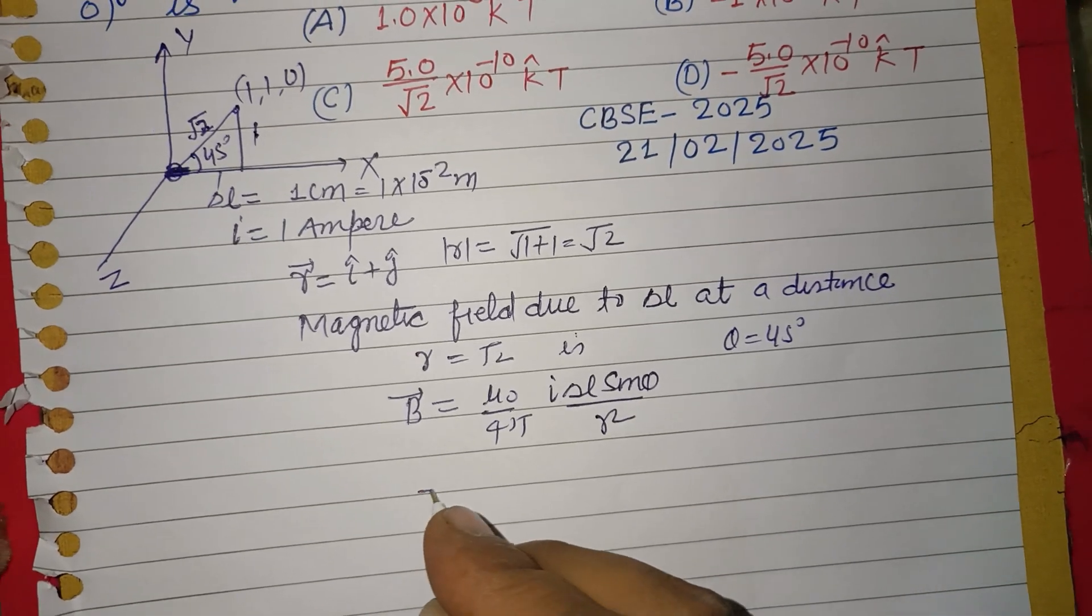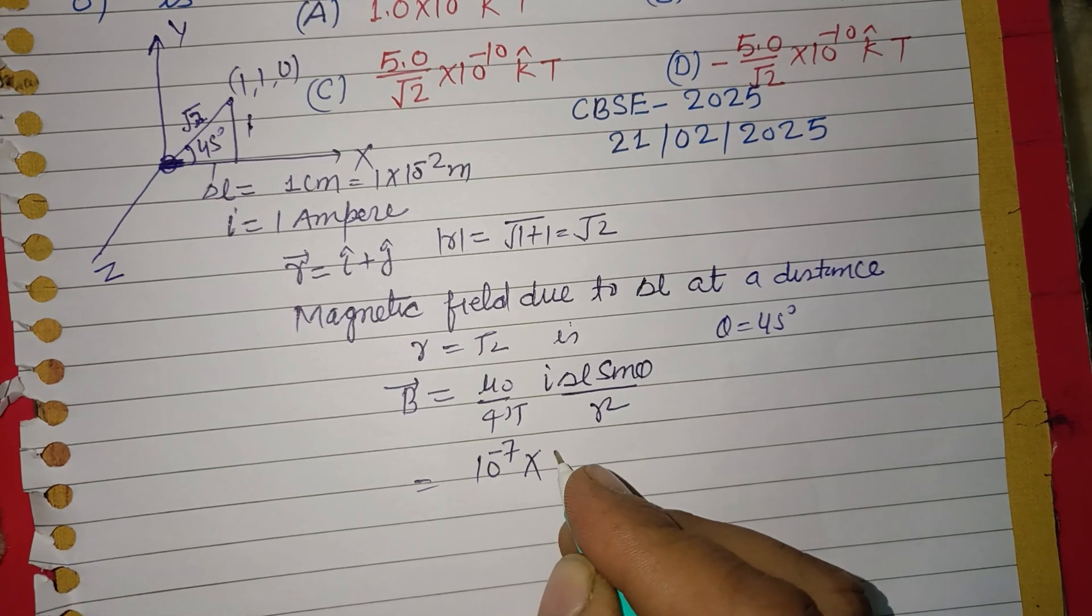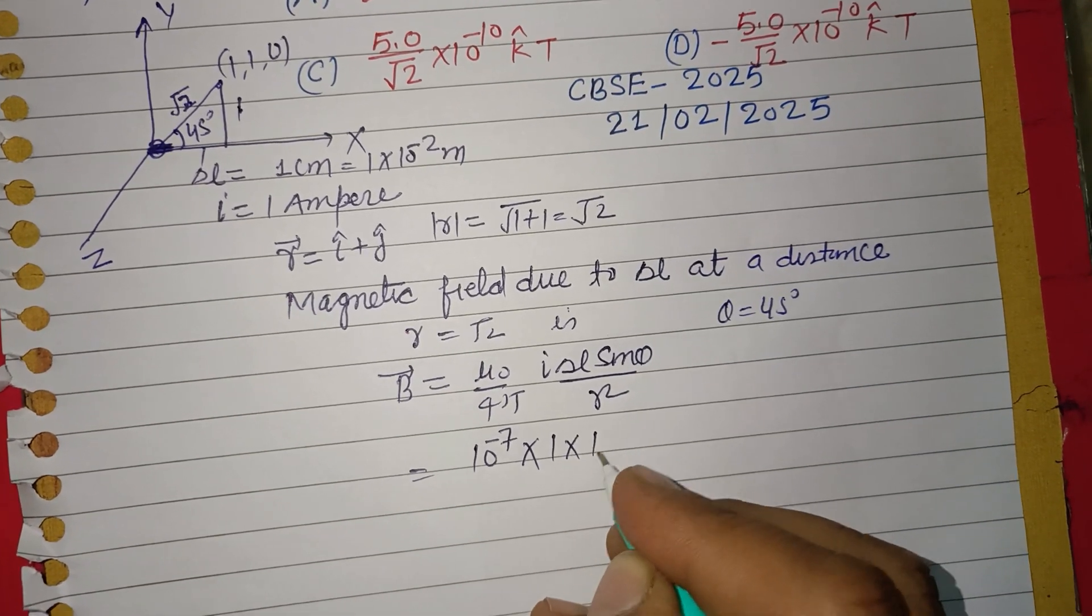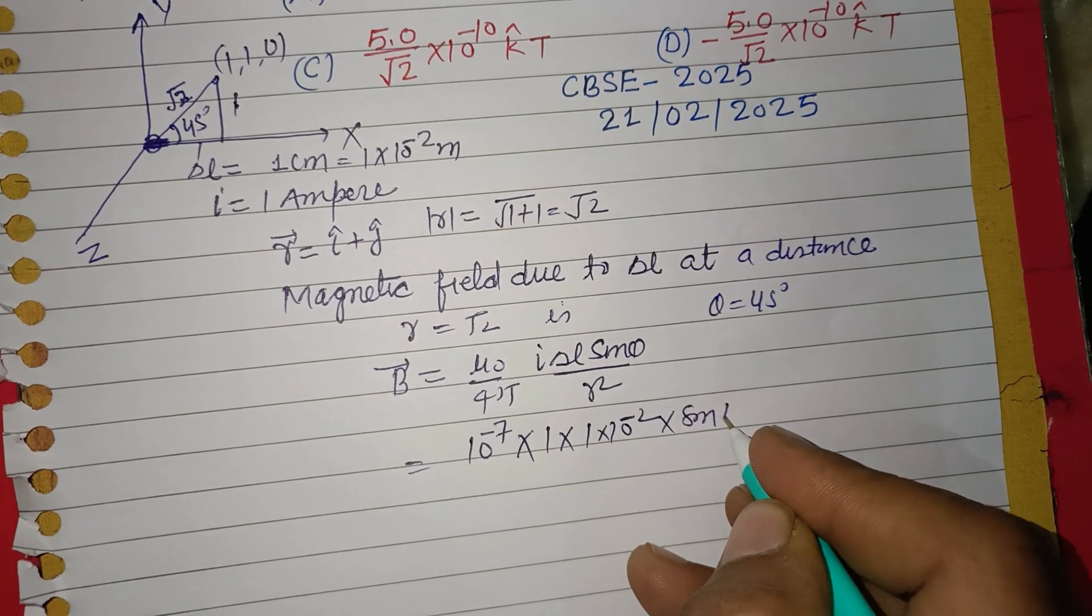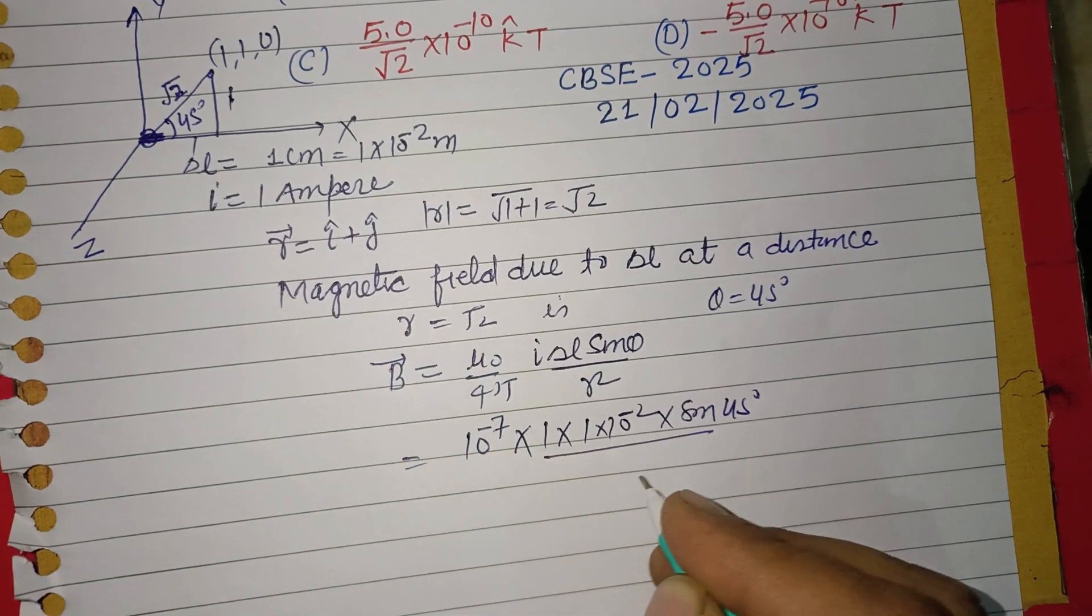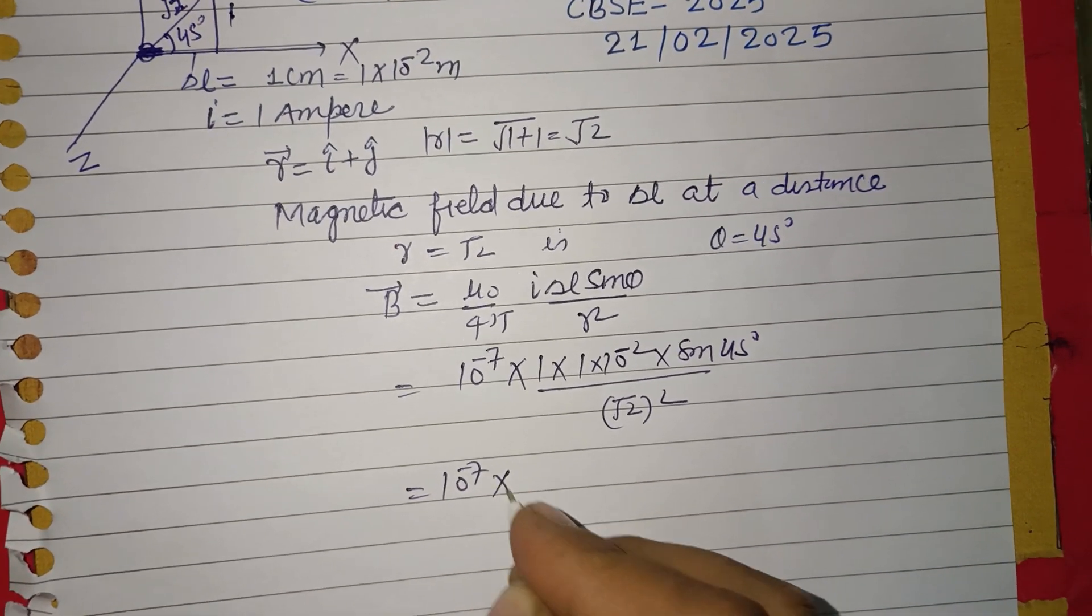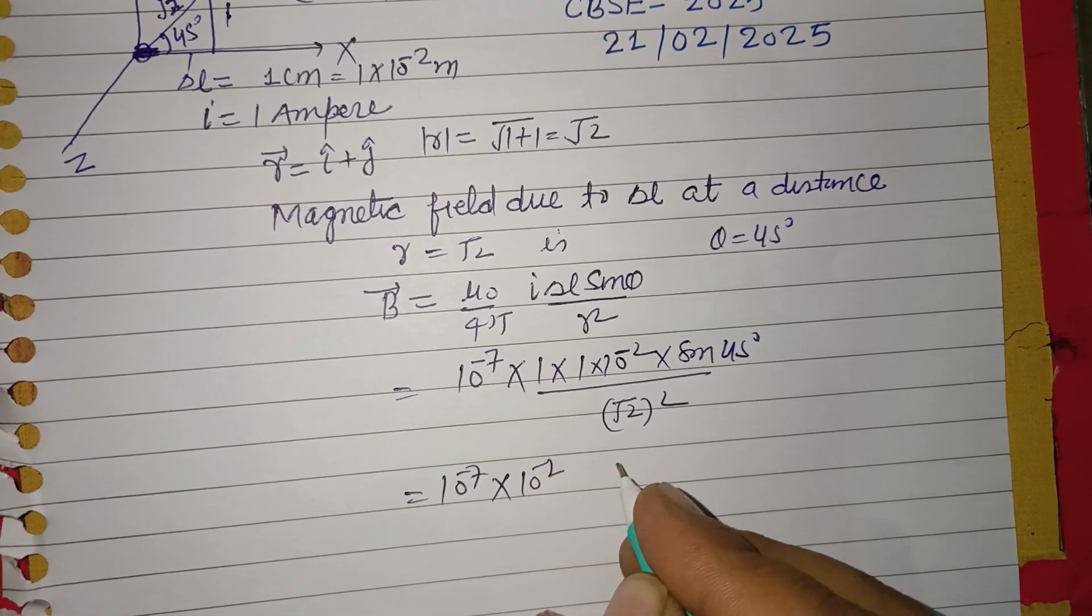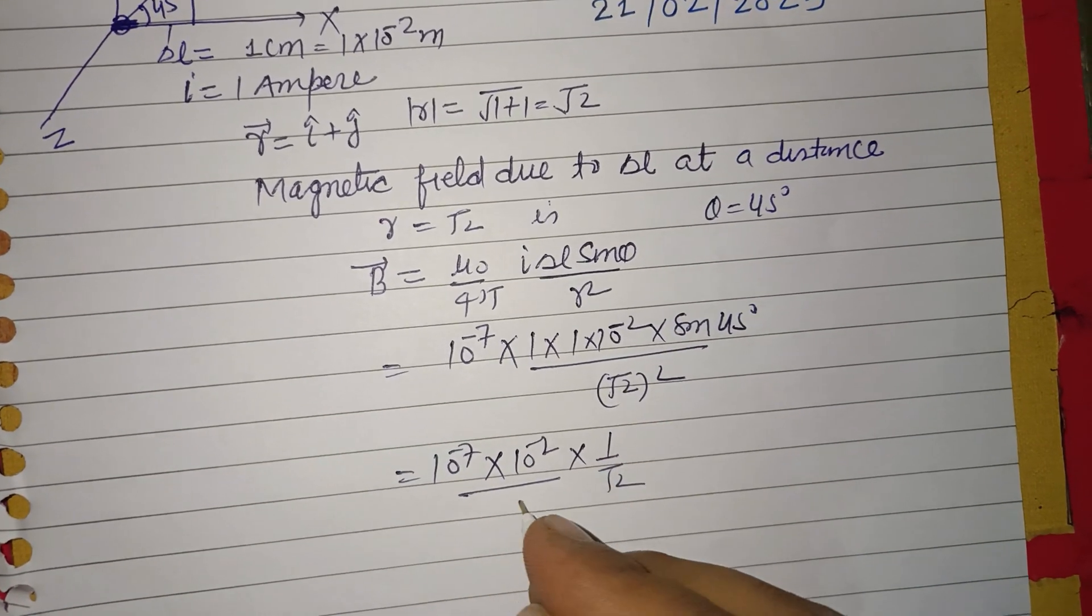Putting these values: μ₀/4π is 10⁻⁷, i is 1, dlL is 1×10⁻², sin45° = 1/√2, and r² = (√2)² = 2. This gives 10⁻⁷ × 10⁻² × 1/√2 ÷ 2.